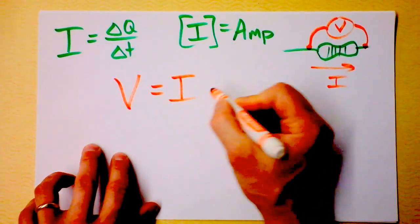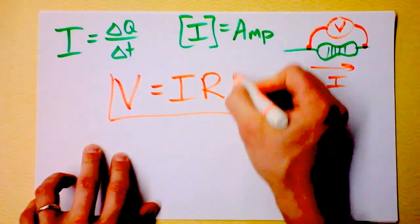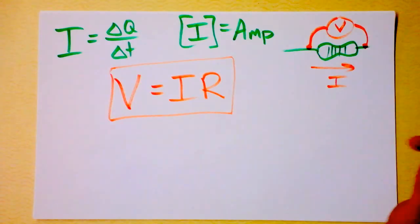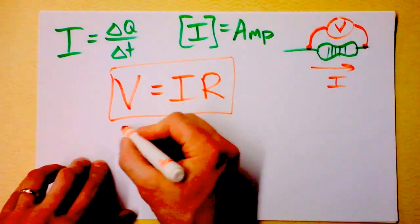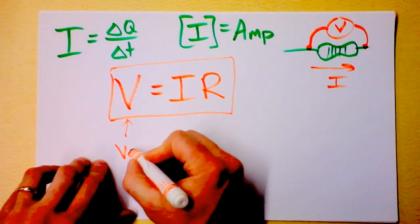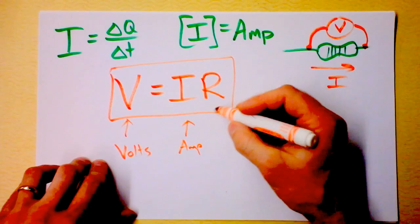If there's a voltage between here and here, the current going through the resistor is given by this equation, a really awesome equation. This is Ohm's law. It's also the Latin spelling for the word man, so you might remember it like that if you take Latin.